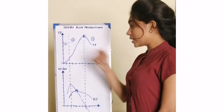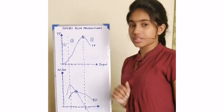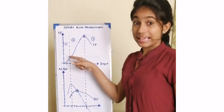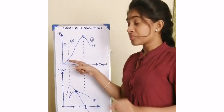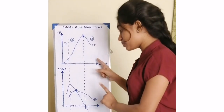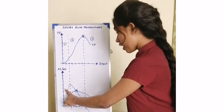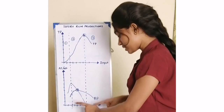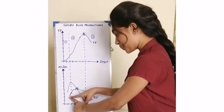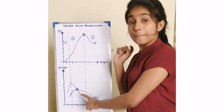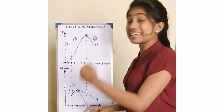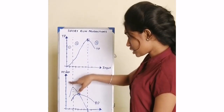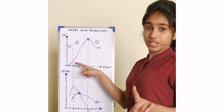In the first stage, the total product increases at an increasing rate. At that point, the marginal product increases sharply whereas the average product also increases. However, AP will be less than marginal product.